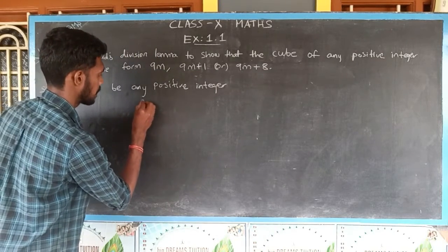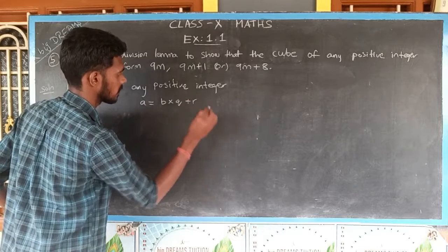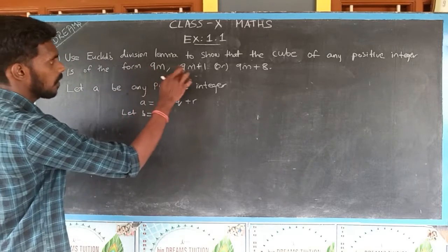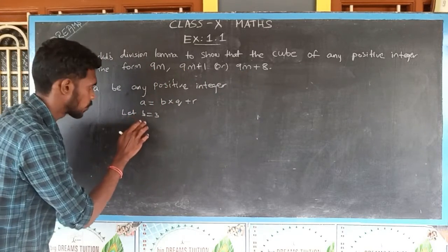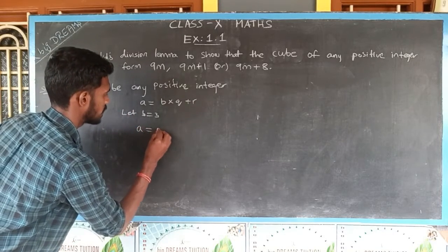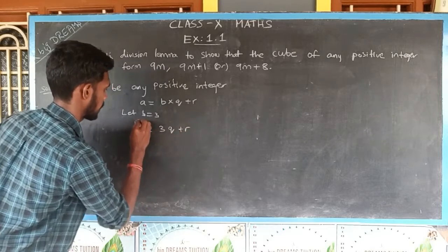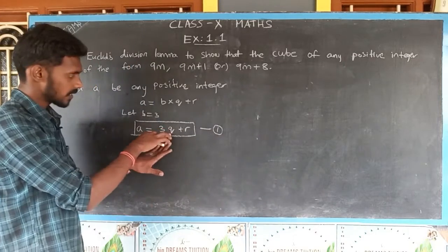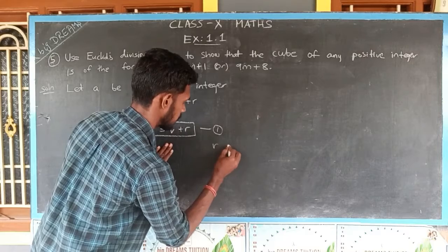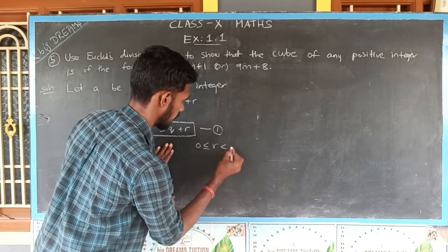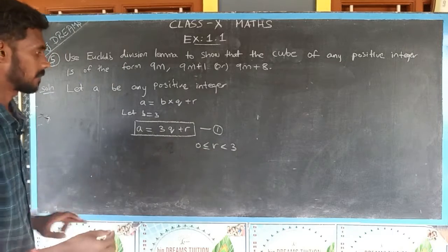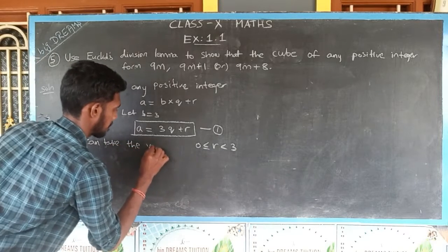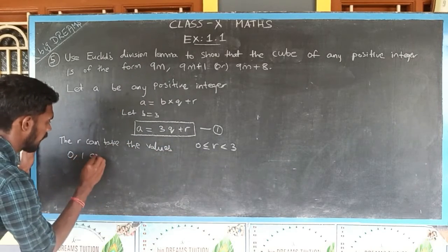Let a be any positive integer. We have to prove the cube of a should be in the form 9m, or 9m plus 1, or 9m plus 8. According to Euclid's division lemma, we can write a is equal to b times q plus r. Let b equal 3, so this becomes a equals 3q plus r. Here q is the quotient and r is the remainder. The value of r lies between 0 and less than 3, so r can take the values 0, 1, and 2.